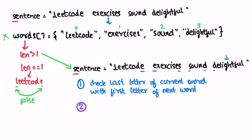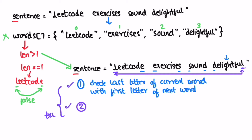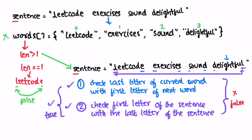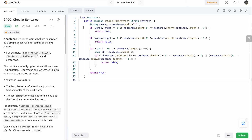Now we do the second check — we check the first letter of the sentence against the last letter of the sentence. Here they are both equal, so we complete both checks. If both checks pass, we return true, and if at least one of these checks fails, we return false.